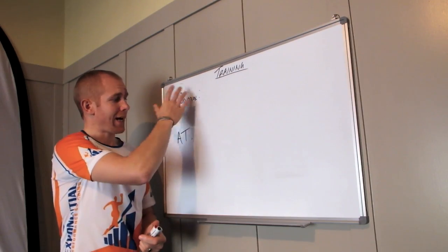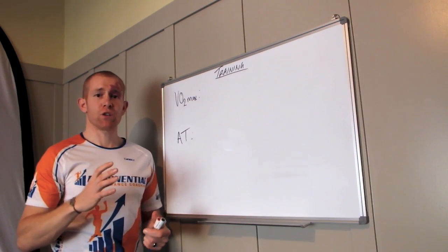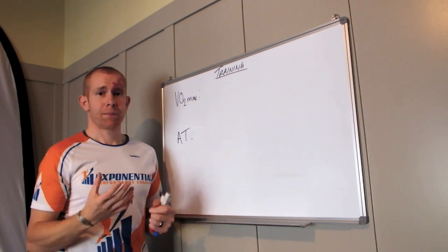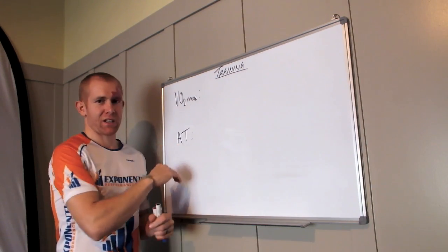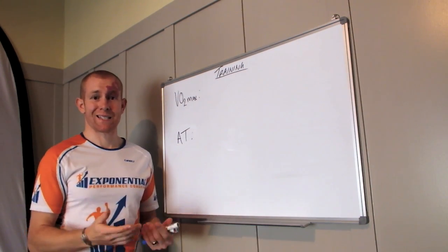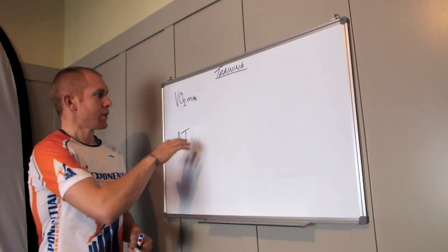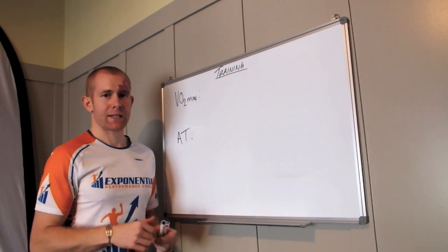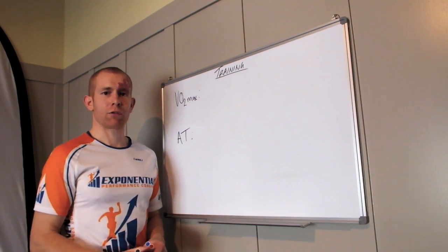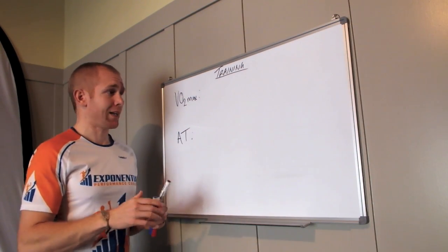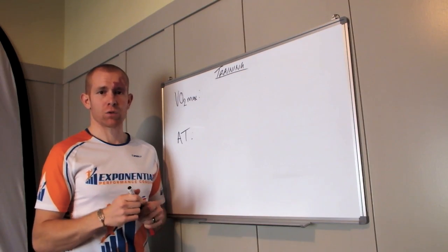So when we target both of these areas, the typical form we use is interval training. Because you can't really do training at this intensity for too long because of the intensity it requires. So the biggest thing for your VO2max and your anaerobic threshold development is the work-to-recovery ratio. This is critical, and it changes the intervals dramatically.